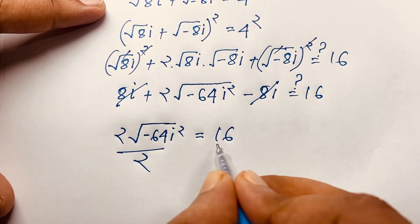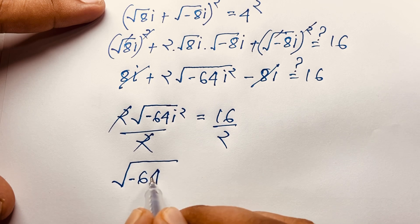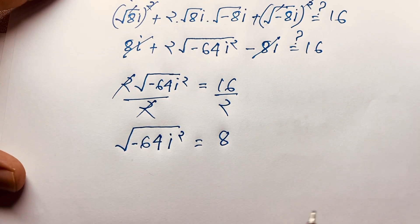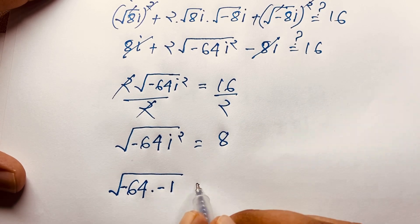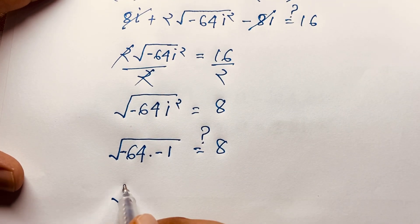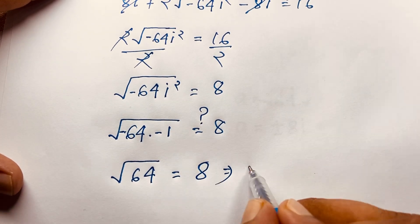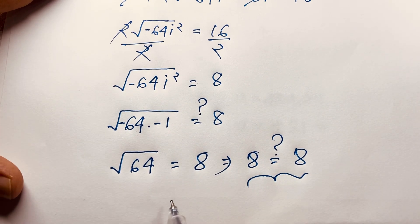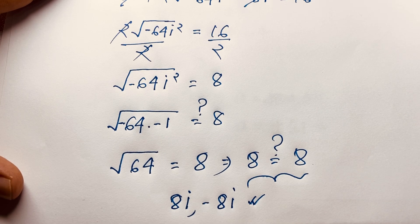Dividing both sides by 2, we find square root of negative 64i² equals 8. Since i² equals negative 1, this becomes square root of negative 64 times negative 1, which is square root of positive 64, which equals 8. So left hand side equals right hand side — both are 8. Therefore A equals 8i and A equals negative 8i are the correct answers to this maths Olympiad question. Thank you all; if you enjoyed this video, please subscribe to my channel for other interesting videos. Goodbye, take care.